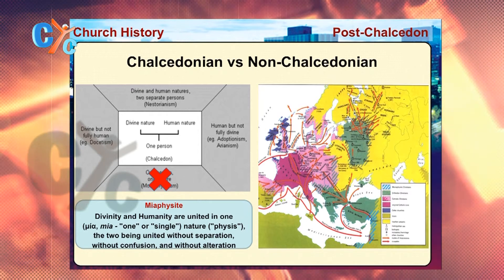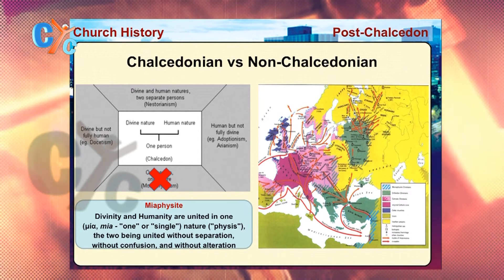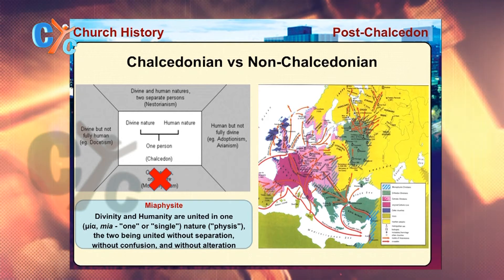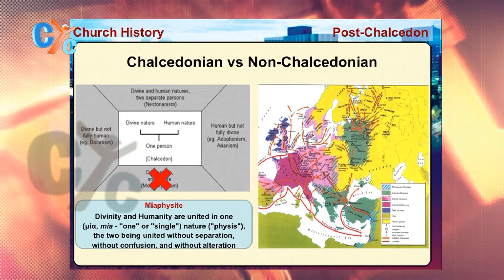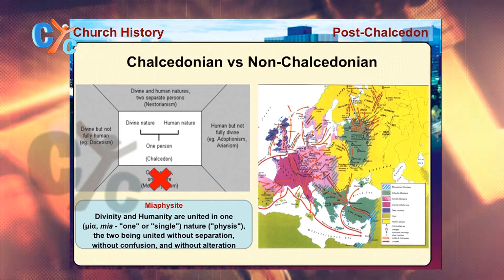But actually our faith states that our Lord Jesus Christ is miaphysite. Miaphysite means one single nature coming from two natures being united without separation, without confusion, and without alteration. This is almost the same faith as the Chalcedonian churches, but due to the difference between Latin and Greek words the confusion happened. Thanks be to God, a declaration of faith was signed between the Chalcedonian and non-Chalcedonian churches in the late 1980s confirming that.